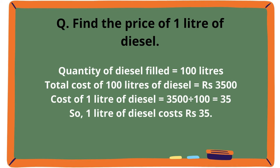Find the price of 1 liter of diesel. Quantity of diesel filled is equal to 100 liters. Total cost of 100 liters of diesel is equal to Rs. 3,500. Cost of 1 liter of diesel will be 3,500 divided by 100, which is equal to 35. So, the cost of 1 liter of diesel is Rs. 35.